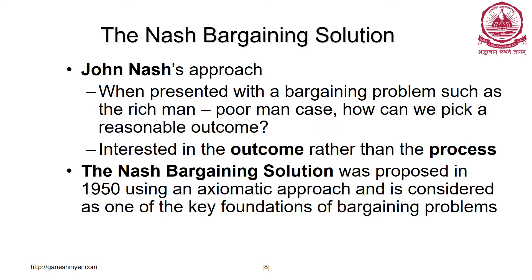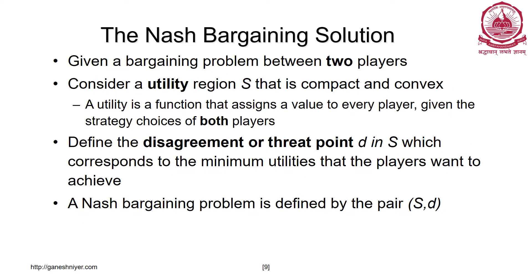The solution is called the Nash bargaining solution, proposed by Professor John Nash. When presented with a bargaining problem such as the rich man/poor man case, how can we pick a reasonable outcome? The bargaining solution is interested in the outcome, not the process. Nash bargaining solution was proposed in the 1950s using an axiomatic approach — it is one of the very key foundations of bargaining problems. Given a bargaining problem between two players, consider a utility region S that is compact and convex. Utility is a function that assigns value to each player.